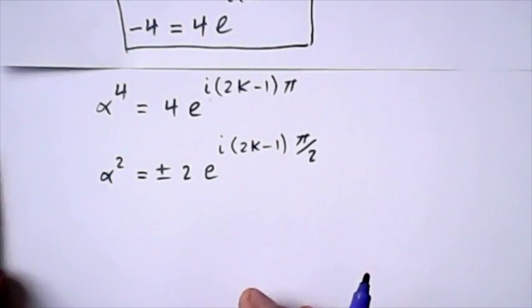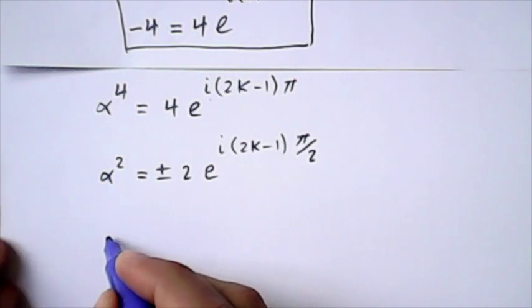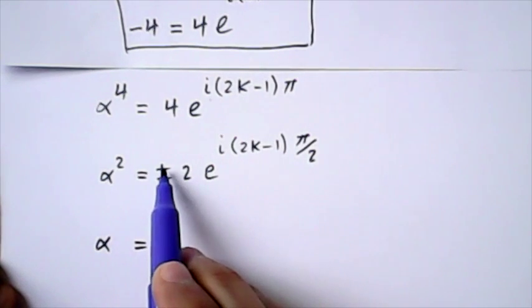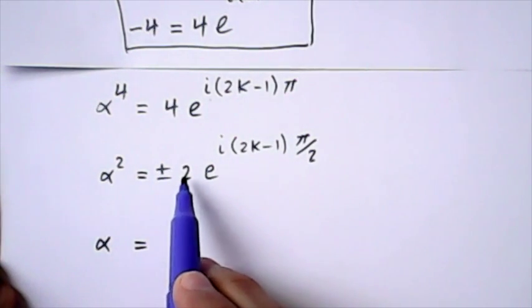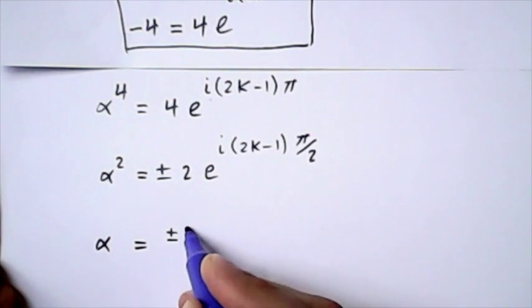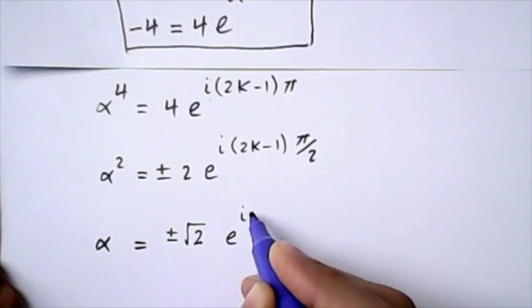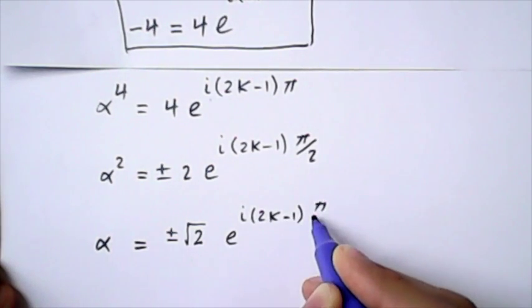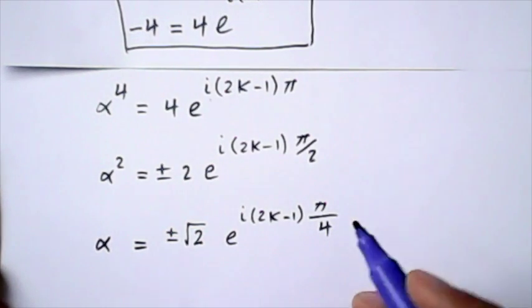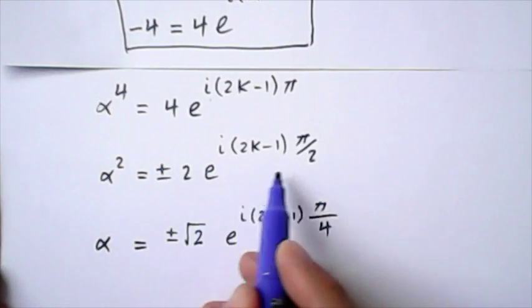Now, let me take the square root again. Let's write it and you'll see how it looks. Alpha would be equal to... So I'm going to take the square root of plus 2 times this guy. So it would be plus and minus square root of 2 times e to the power of i, 2k minus 1 times pi divided by 4. And once I'm going to take the square root of minus 2 times that guy.